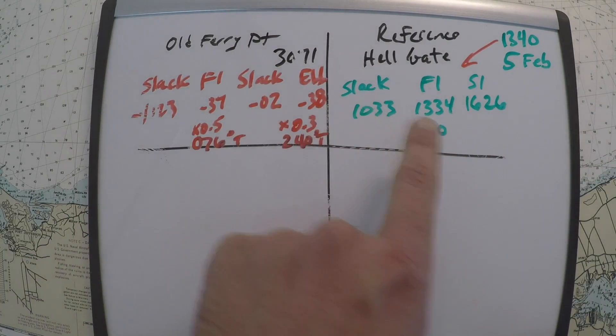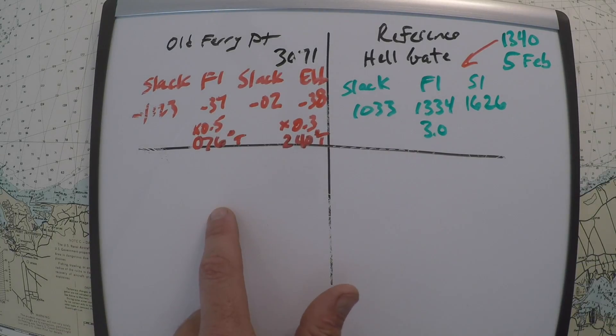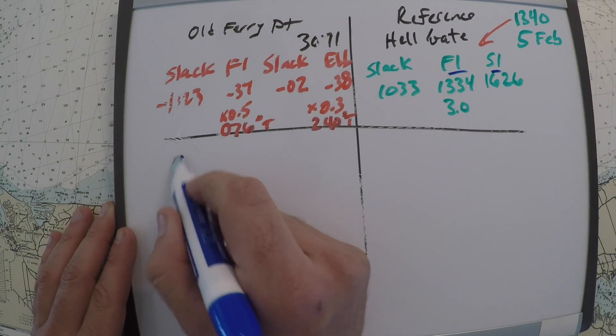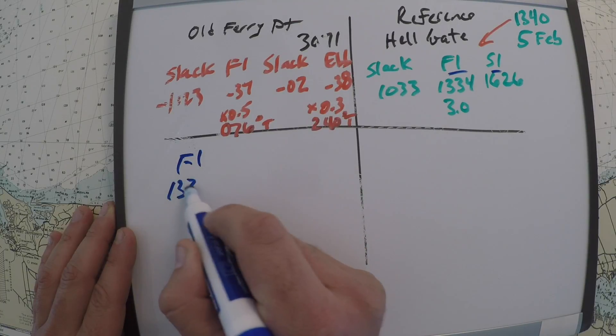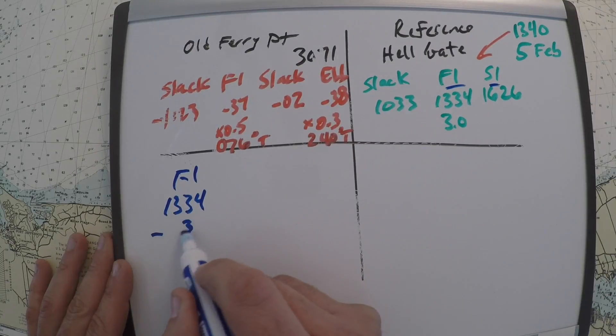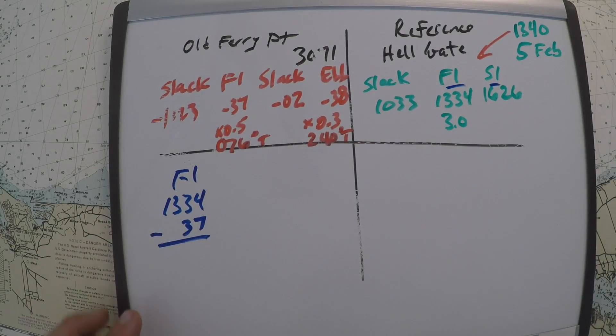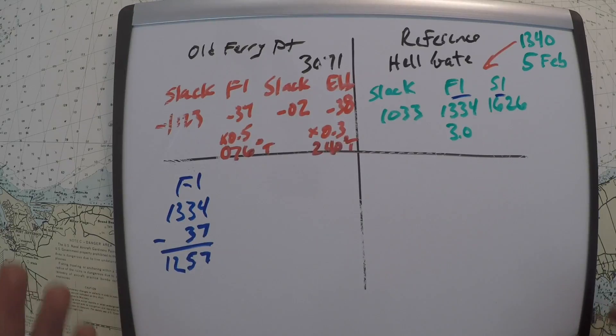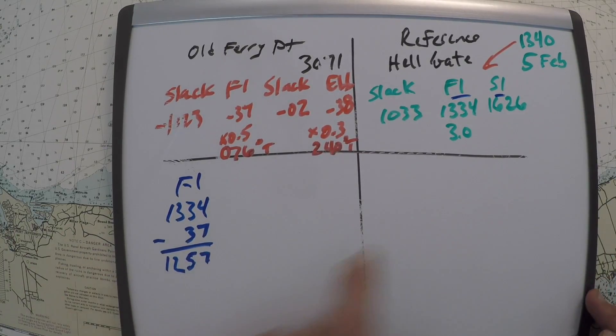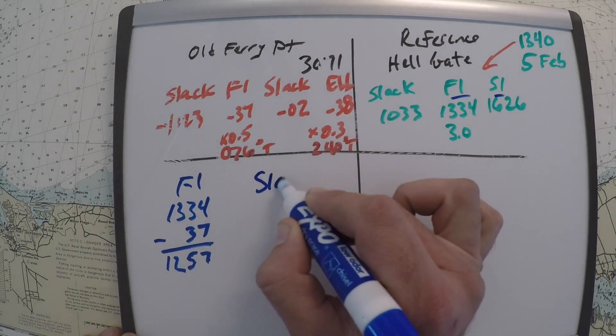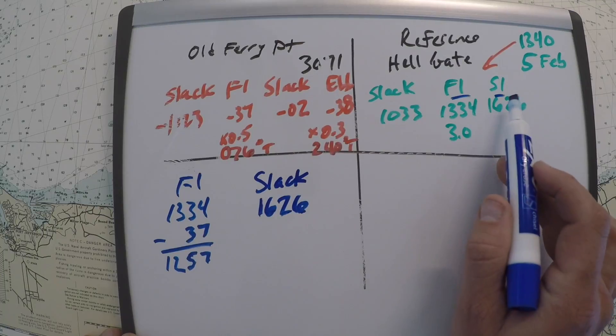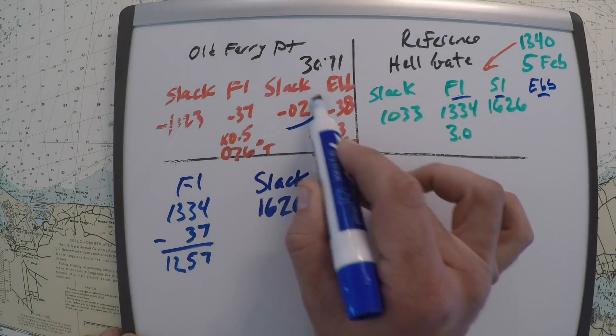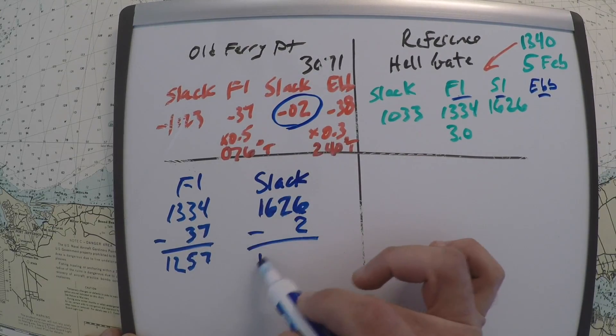So our time of 1340 looks like it'll fall somewhere in there. The problem is you've got to remember these offsets. You still have to apply these offsets to it. So down in this column is where we do the math. And so up here, it looks like I'm going to choose these two here. So we've got a flood at 1334. And I need to apply an offset of minus 37 minutes. So if I do that math out, I get 1257 for my flood. Looks like for the slack, it's at 1626. And now this is a slack before an ebb. The next current here would be an ebb. So I need to choose this correction right here. Minus two gets me to 1624.